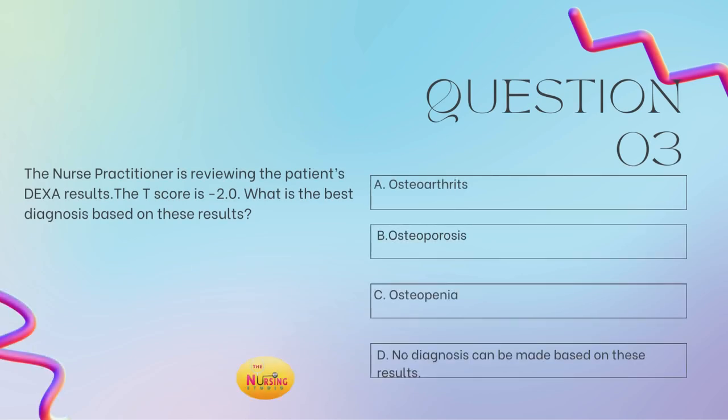And then lastly, question number three: the nurse practitioner is reviewing the patient's DEXA results. The T-score is negative 2.0. What is the best diagnosis based on these results? Is it A, osteoarthritis? B, osteoporosis? C, osteopenia? Or D, no diagnosis can be made based on these results? Take a moment and tell me what you got.